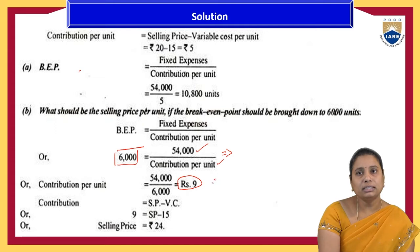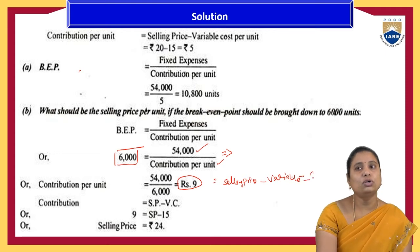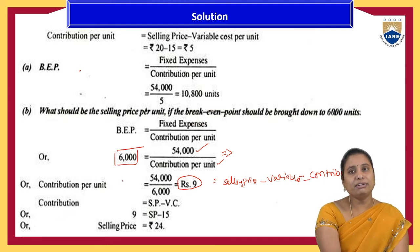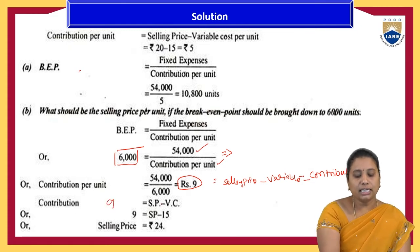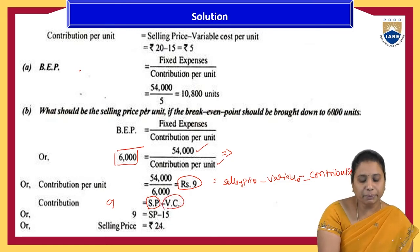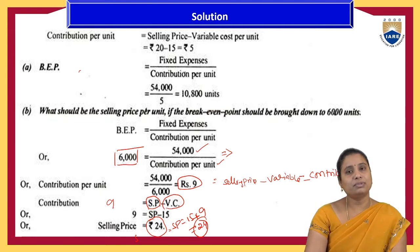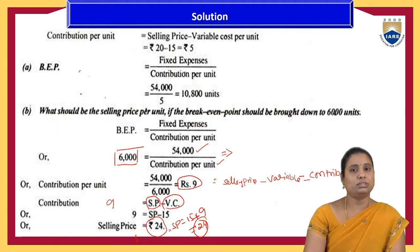Contribution per unit = selling price minus variable cost. So selling price = variable cost + contribution = ₹15 + ₹9 = ₹24. If the selling price is set at ₹24, then the break-even point target may be reduced to 6,000 units instead of 10,800 units at ₹20 selling price.